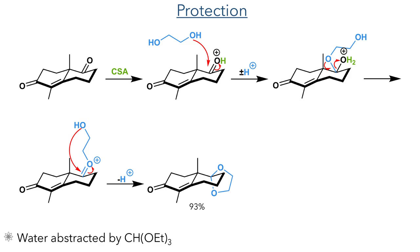The first step was to protect the Wieland-Miescher ketone with ethylene glycol, which was catalyzed by CSA. This first protonates the ketone, allowing the hydroxyl group to attack, forming a hemiacetal that is further protonated and eliminates water. The other hydroxyl group present in ethylene glycol then undergoes an intramolecular attack to complete the formation of the acetal. Triethyl orthoformate was added to the reaction to abstract the water and ensure that the reaction went to completion.